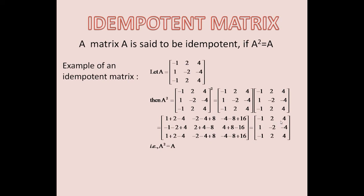This simplifies to minus 1, 2, 4; 1, minus 2, minus 4; minus 1, 2, 4, which is the same as the original matrix A. Therefore, we get A squared is equal to A. Therefore, this matrix is idempotent.